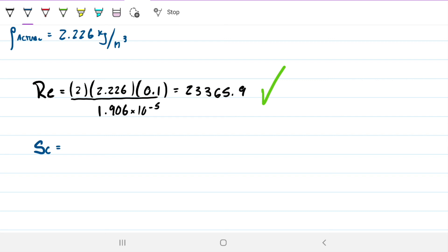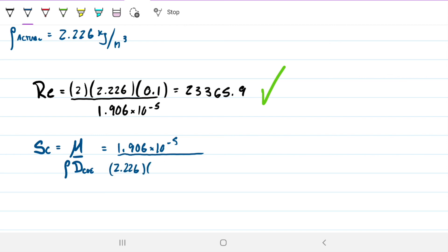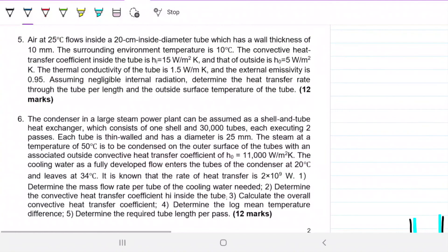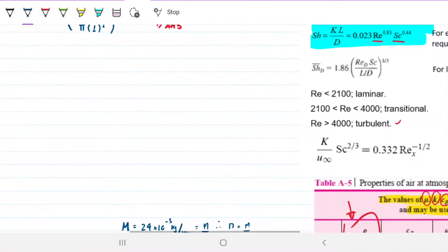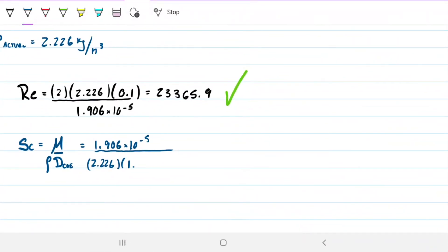I always flip those. So the viscosity, the density, and the diffusion coefficient. I already did the coefficient here because this can be easily confused with diameter. We have these values. So this is 1.906 times 10 to the minus 5. This is 2.226. And this here was given, 1.2 times 10 to the minus 5. So these guys go away. Schmidt's number for this case is 0.713. Dimensionless once again. So we got this fellow too. All good.